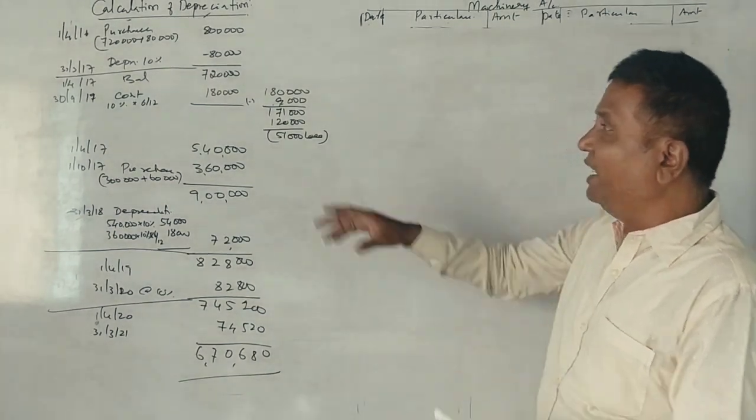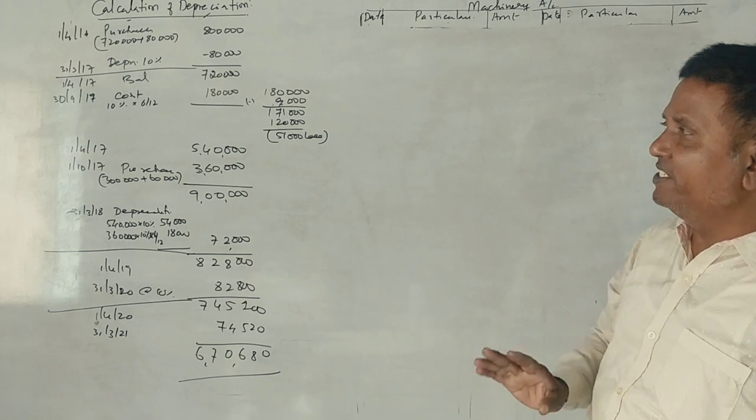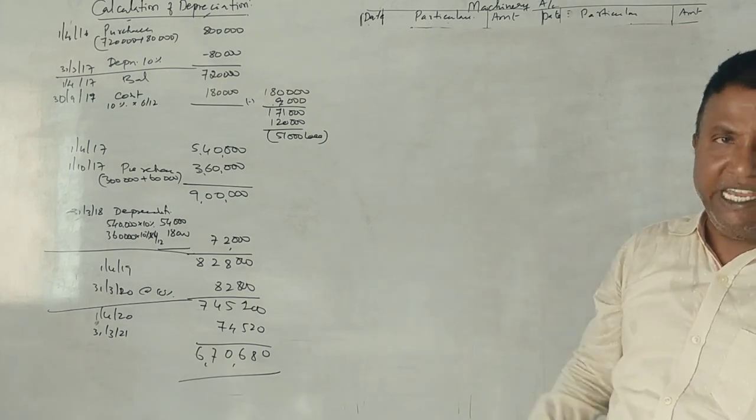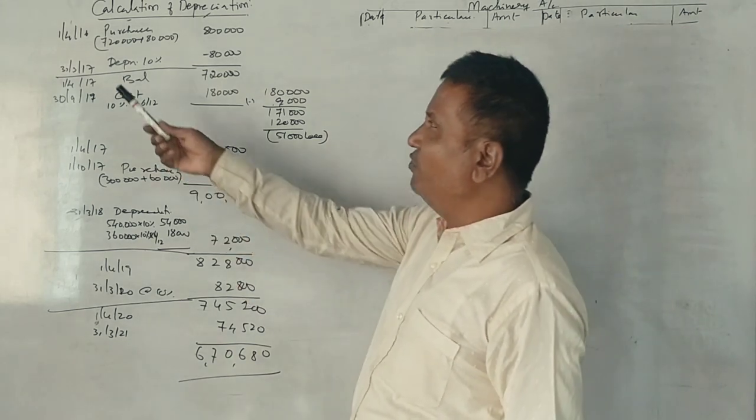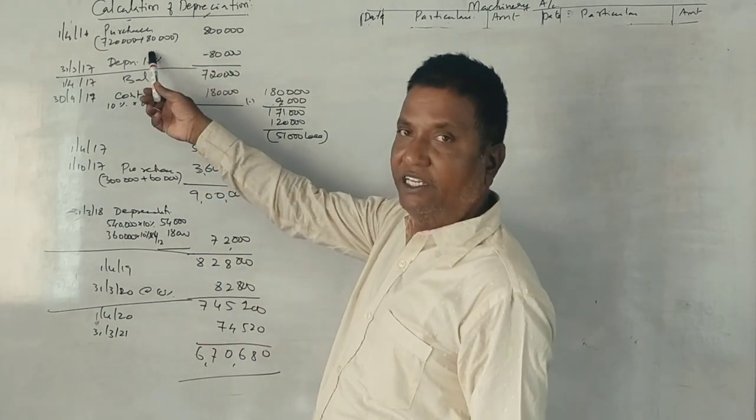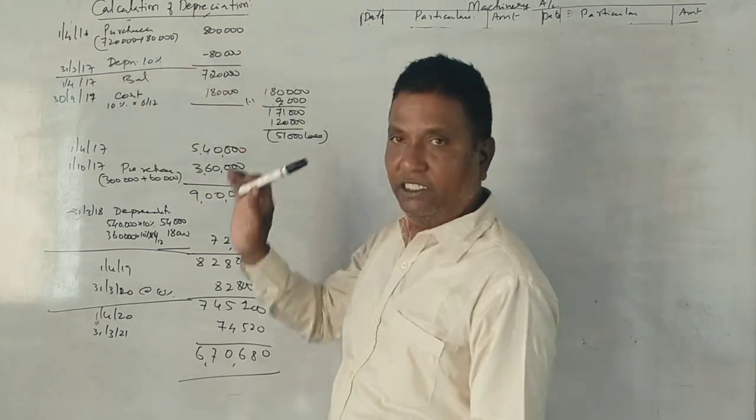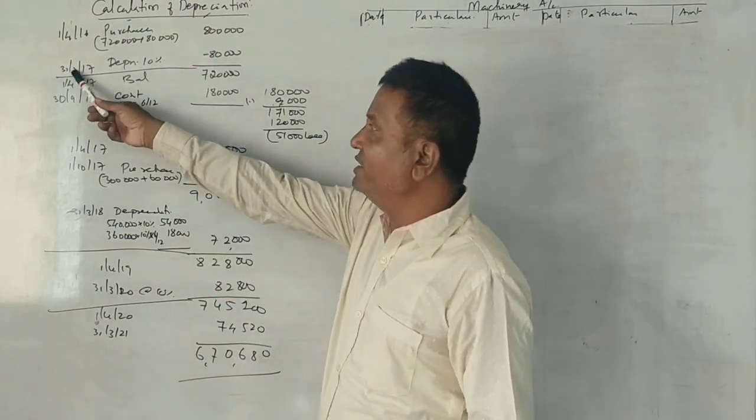In the calculation, the first year. In 1st April 2016, one machine was purchased. $720,000 plus $80,000 installation is $800,000. In March 2017, depreciation 10%.